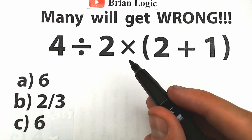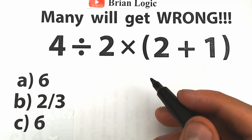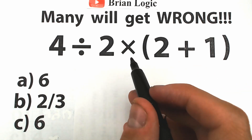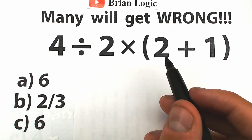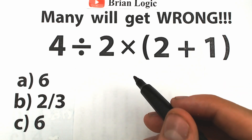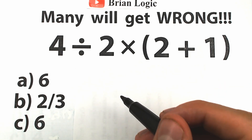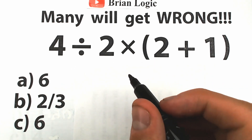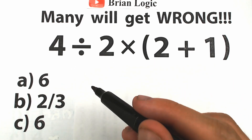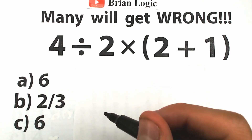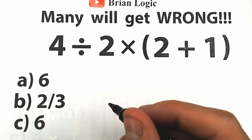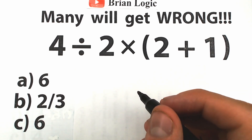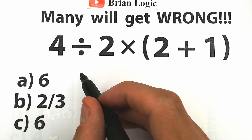Here's our challenge today: 4 divided by 2 times 2 plus 1 inside parentheses. A lot of students might say this is the easiest challenge ever — we have division, multiplication, and addition. Everyone learned this in third grade. Go ahead and put your answer in the comment section. We have only values 4, 2, and 1. We have three options: A, B, and C — choose the one you think is correct.